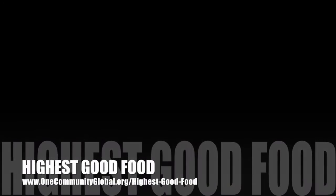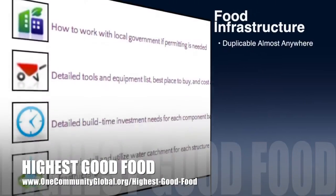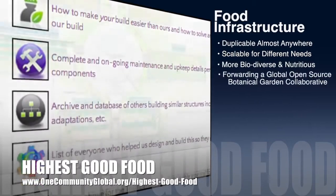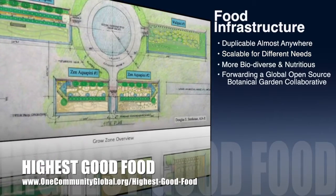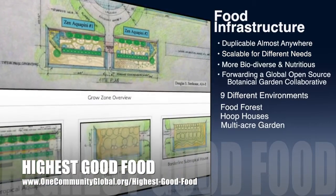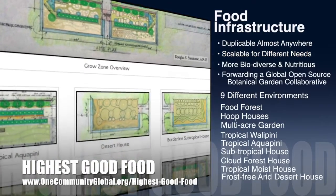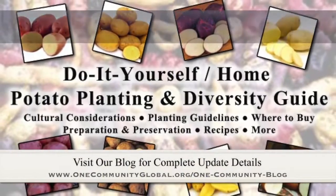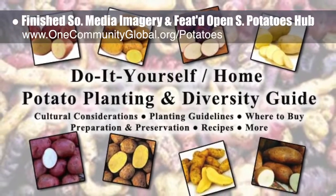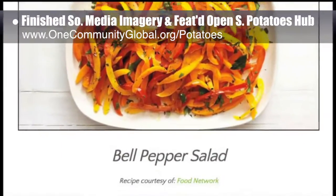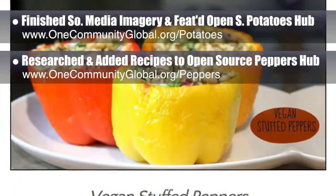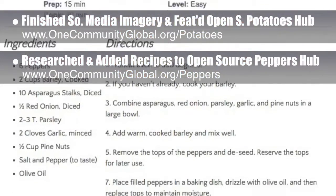OneCommunity's approach to highest good food is duplicable almost anywhere, scalable for different needs, more biodiverse and nutritious, part of forwarding a global open source botanical garden collaborative, and includes nine different free shared and duplicable growing environments. This week, the core team working on highest good food finished the final social media imagery and featured our open source potatoes hub. We also featured and added two additional recipes to the open source peppers hub, which you can see here.